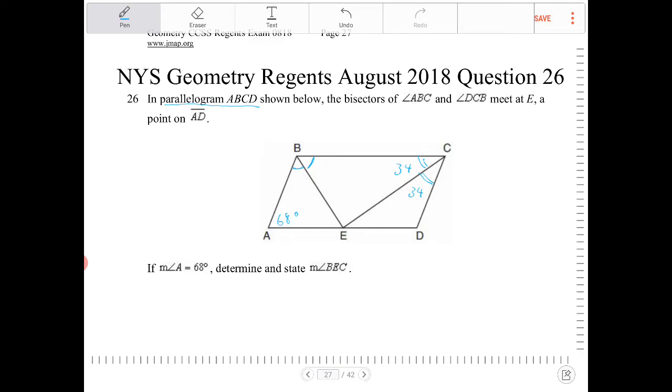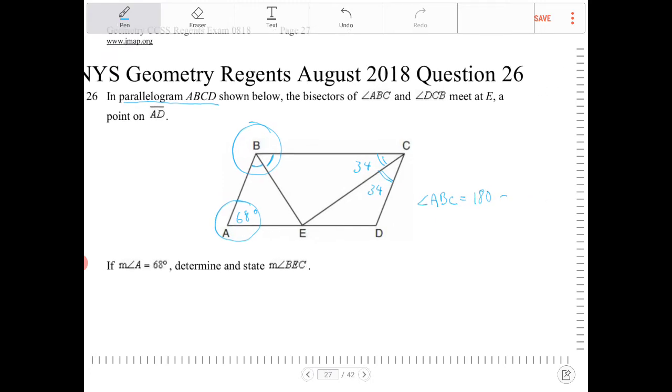Another property that you should know about parallelograms is consecutive angles are supplementary. So all of angle B, so angle ABC, that is, should equal to 180 minus 68 degrees.